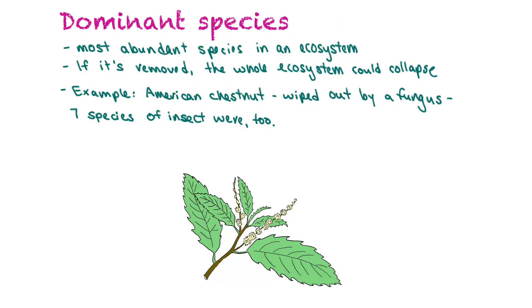A dominant species is the most abundant species in an ecosystem, and if it's removed the whole ecosystem could collapse. An example of this would be the American chestnut — it got wiped out by a fungus and seven species of insects were also wiped out when that happened.